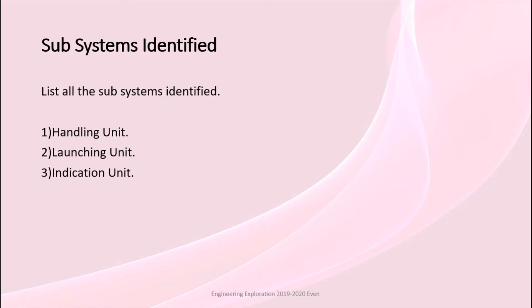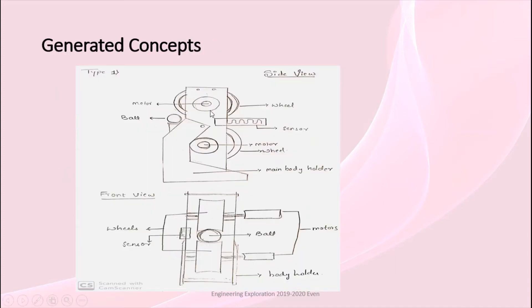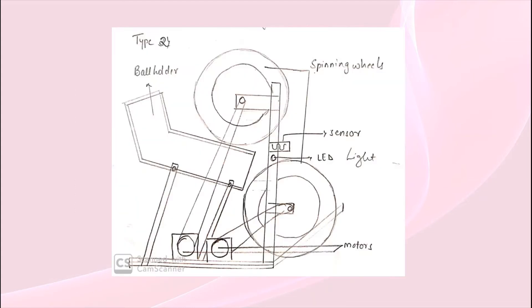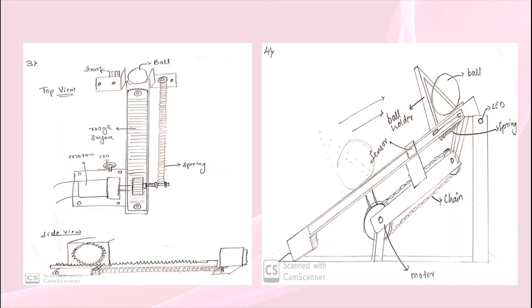As mentioned in the function tree, we have three subsystems: handling unit, launching unit, and indication unit. By reviewing our project requirements we generated some concepts. The first concept uses two wheels with motors to apply force to launch the ball. The second concept also uses two wheels but with the motor placed at the bottom and rubber attached to the wheels for rotation and launching. The third concept uses a spring mechanism.